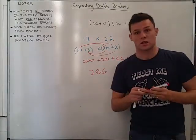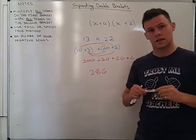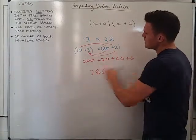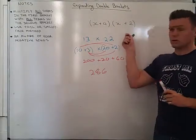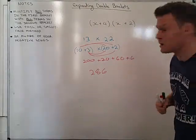And if I multiply that together, and you can quickly check on your calculator, I will get 286. Now this method here that we are using is the exact same method that we are going to have a look at and use when we multiply out and expand our double brackets.